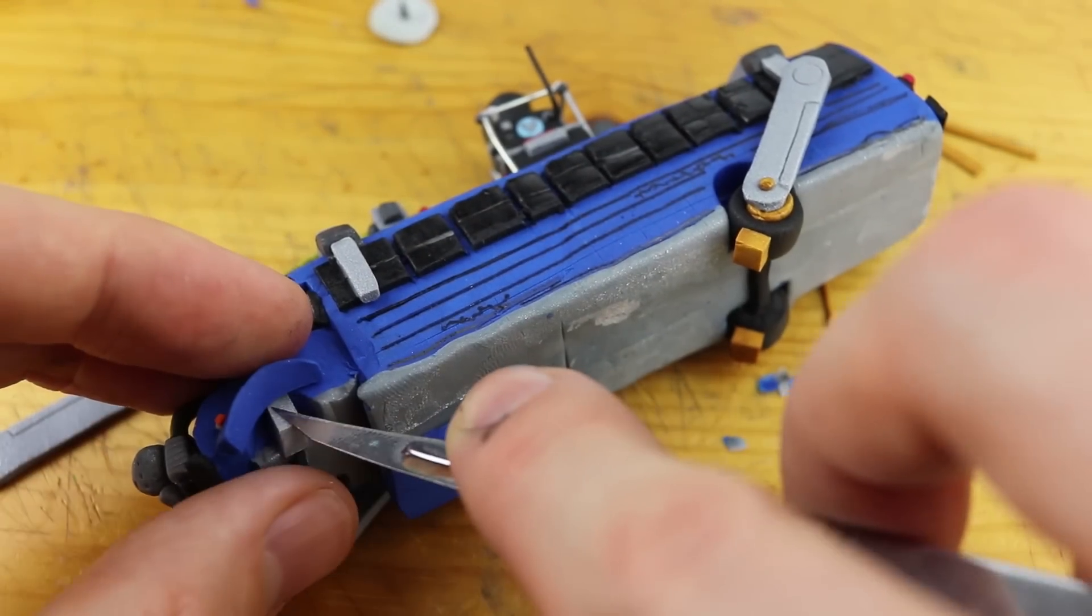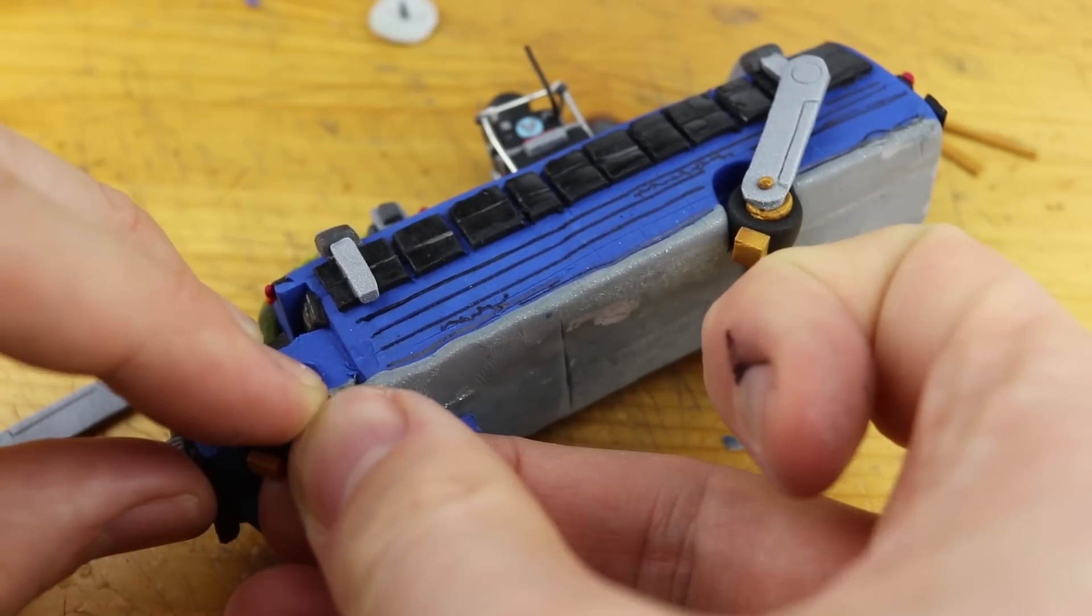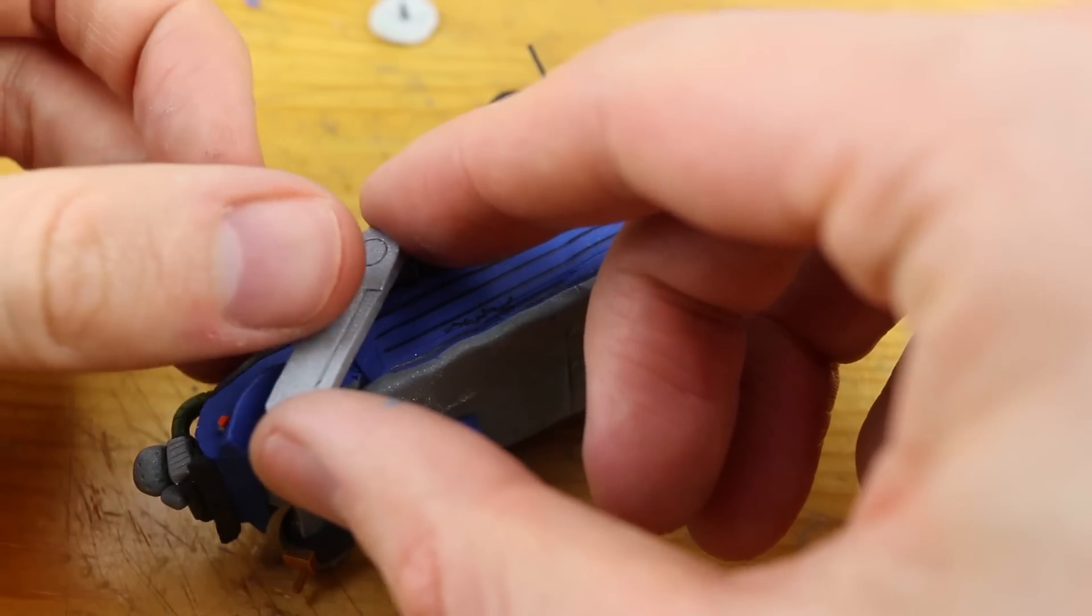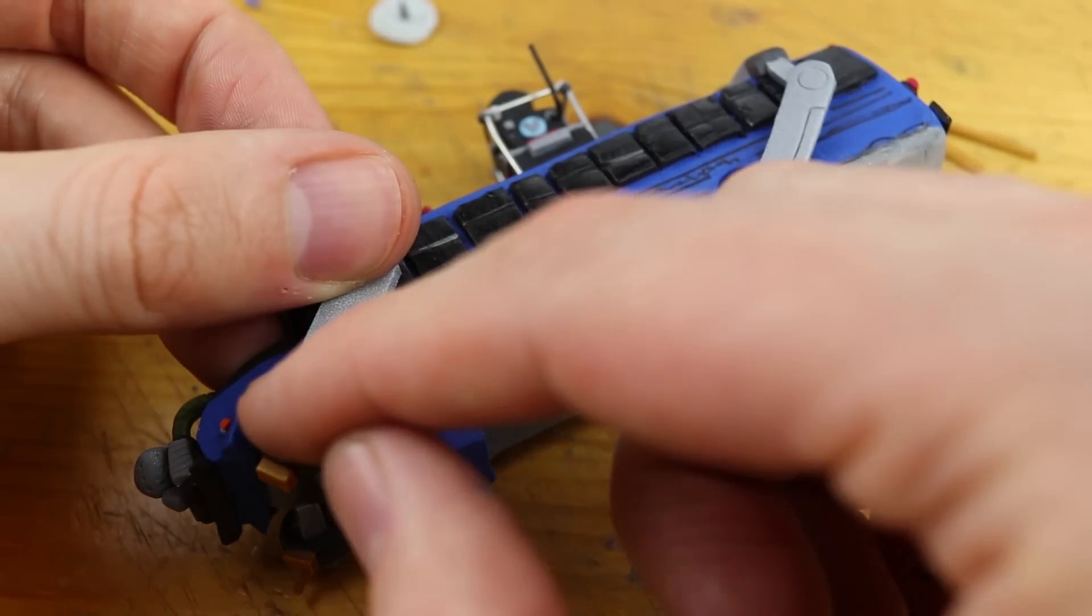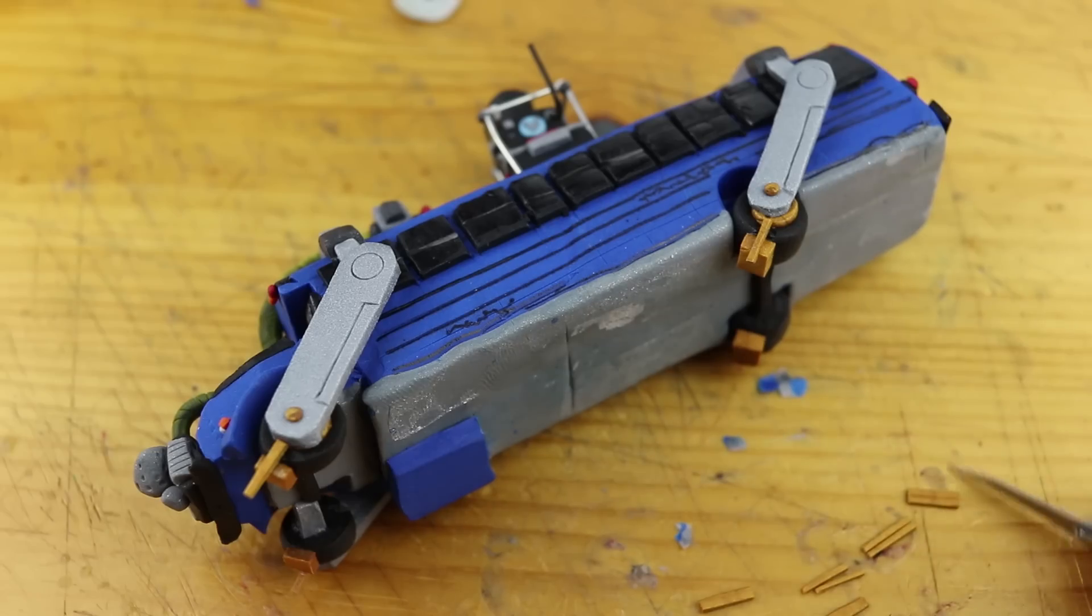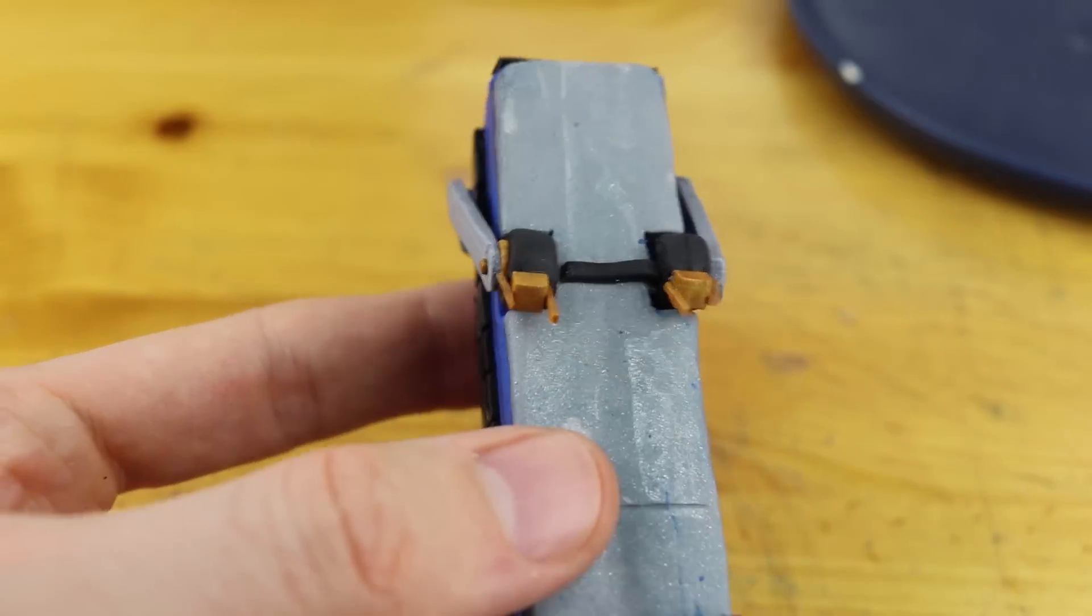Yeah, this is the thing which makes this bus look unique. These metal pieces, whatever they are called. Maybe balloon straps, balloon barret, I don't know.